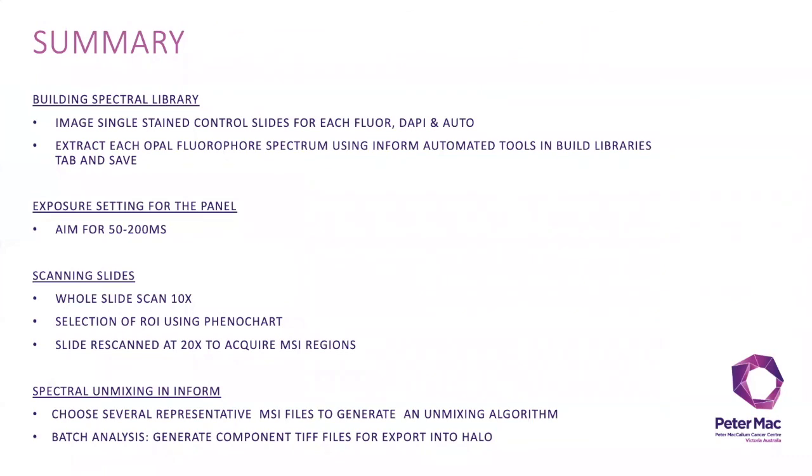So just to summarize the Vectra 3 imaging workflow. The first step is to image your single stain control library slides using the Vectra and then to build your spectral library using InForm. After setting your exposures for each slide the Vectra 3 imaging platform is used to scan the entire fluorescent slide at times ten magnification. The whole slide image is then loaded into PhenaChart for manual annotation of your regions of interest after which the slide is rescanned at high magnification to acquire your multispectral images. InForm software is then used to perform the spectral unmixing of your MSI files which are then batch analyzed to generate your component TIF files which can be exported into Halo for image analysis.